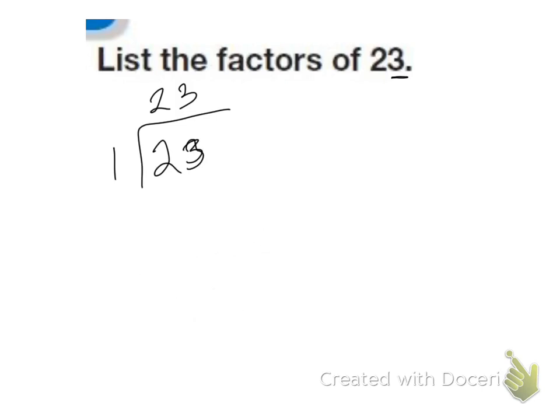So the only numbers that can go into 23 are 1 and 23. There are no other factors.